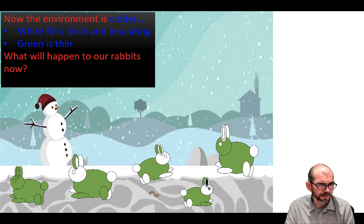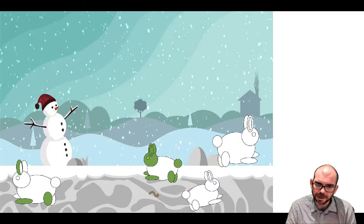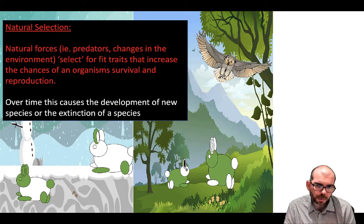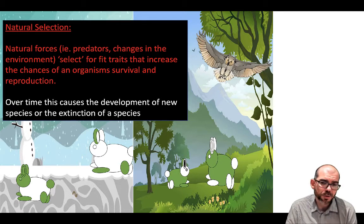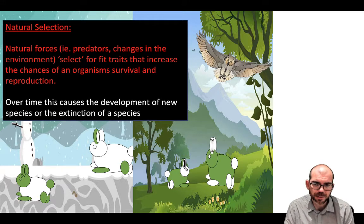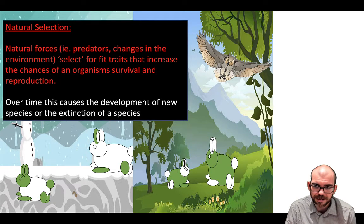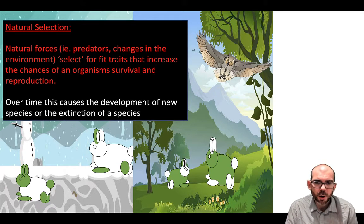What do you think is going to happen to our rabbits now? Well, the green one is probably not going to make it through the cold, so you'll probably see an increase in the white trait. This is what we mean when we talk about natural selection. Natural forces such as predators or change in the environment are selecting for fit traits. If you have traits that help you survive in a specific environment, you're more likely to reproduce and pass them down. If you have traits that don't help you survive, you're likely to pass away before you reproduce, causing an increase in the chances of an organism with that fit trait to survive and reproduce.